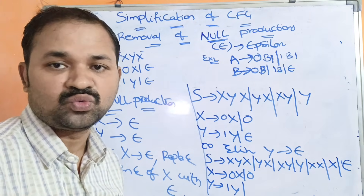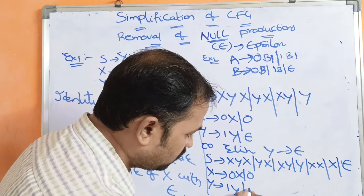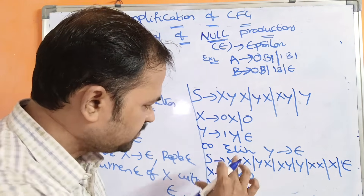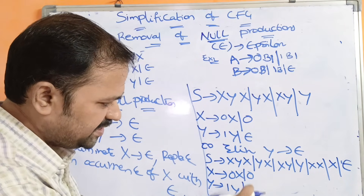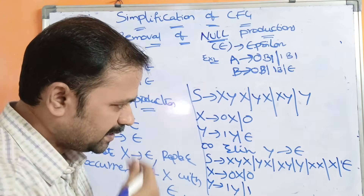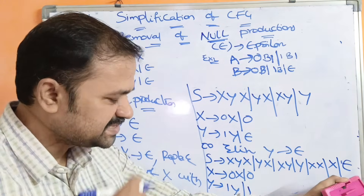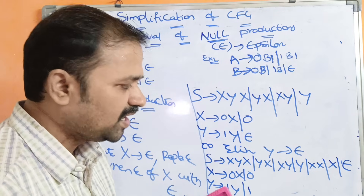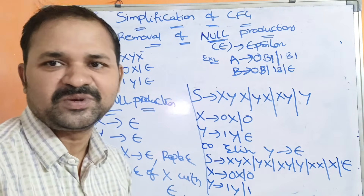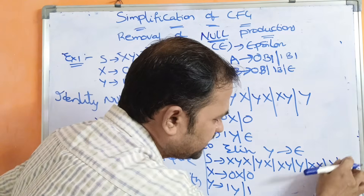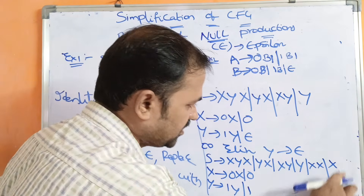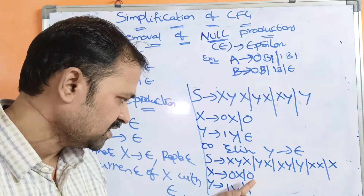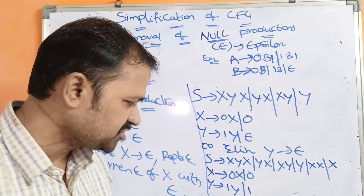For Y: write Y produces 1Y as-is, then replace Y with epsilon — 1·epsilon is nothing but 1. So Y produces 1Y or 1. Checking the grammar, there is no epsilon remaining except in S produces epsilon from the start symbol, which cannot be replaced since S does not appear in any right-hand side. So that epsilon is removed and the grammar is now free of null productions.